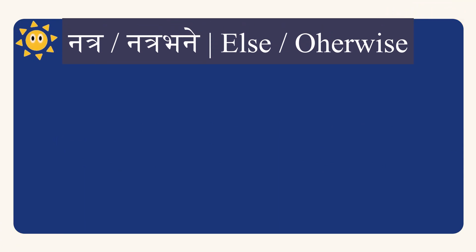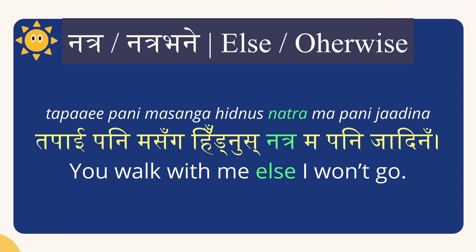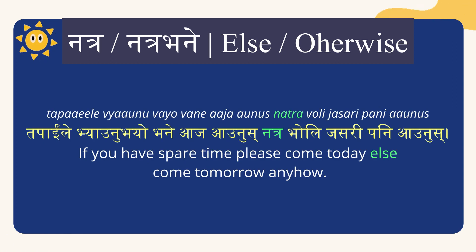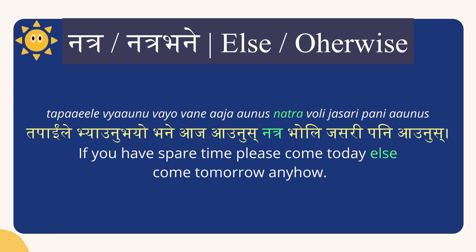The next conjunction is natra or natra bane, which means 'else' or 'otherwise'. Tapai pani ma sanga hidnus natra ma pani jadina — you walk with me else I won't go. Tapai le phursat bhayo bhane aja aunus natra bholi jसरी pani aunus — if you have spare time today please come today, else come tomorrow anyhow. Here, jasari means 'anyhow'.